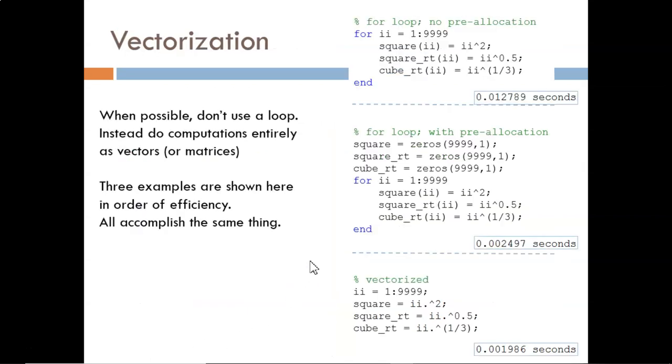We can do even better. Whenever possible, avoid the use of loops, which spend a lot of time making decisions and updating index variables. Instead, vectorize. This means applying one operation across all array values at once in an element-by-element fashion.